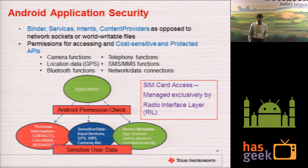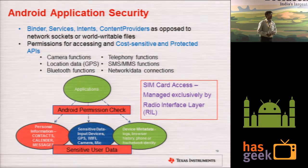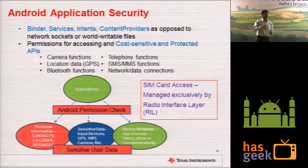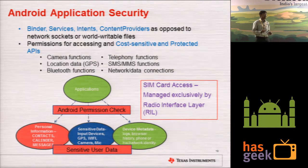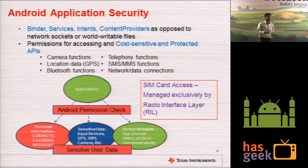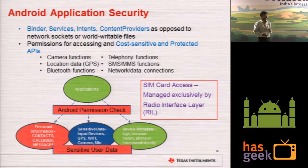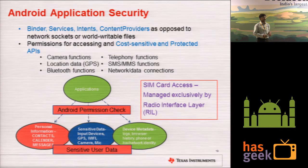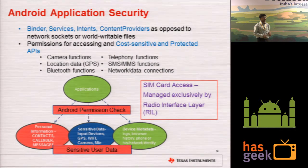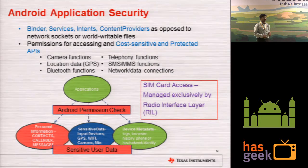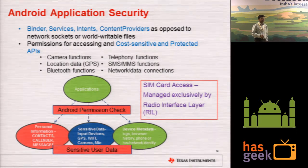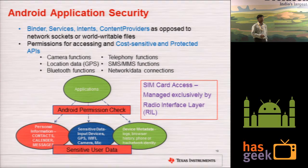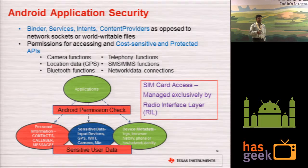Now moving to the middle level, the Android app framework classifies system resources — some APIs are cost-sensitive and some are protected APIs. From applications, there is a permission check level under which all personal information, sensitive input devices, and user data fall. All these constitute the sensitive user data and protected APIs. Android enforces permissions at an intermediate level. SIM card access APIs are a special case — you cannot access the SIM card using regular permissions; you have to call through the Radio Interface Layer (RIL).